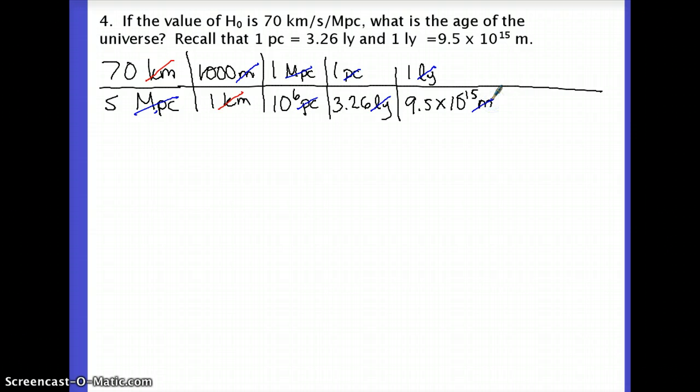What we need to do is plug this into the calculator, and what I will be left with is something over seconds. What I get is that H₀ equals 2.26 times 10⁻¹⁸ per second. Inverse seconds - the second is in the denominator.